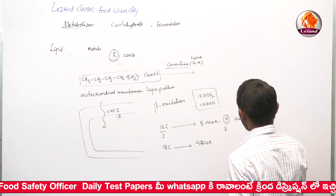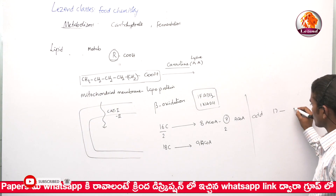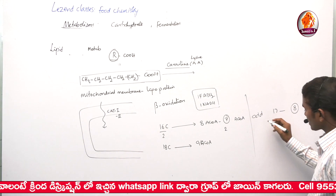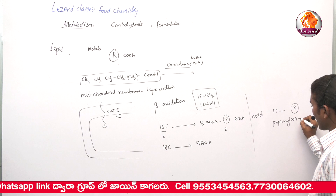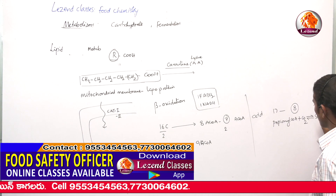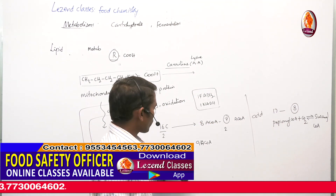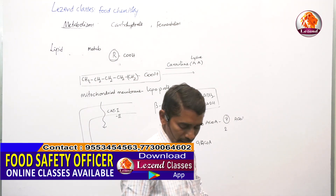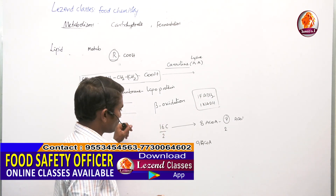In the case of odd-carbon containing fatty acids — for example, 17 or 19 carbons — a 17-carbon fatty acid also generates eight acetyl-CoA molecules, but the last compound is propionyl-CoA, a three-carbon containing molecule. This propionyl-CoA, by accepting one more carbon dioxide in the presence of biotin-CoA enzyme, gets converted into succinyl-CoA. Succinyl-CoA then enters the TCA cycle.